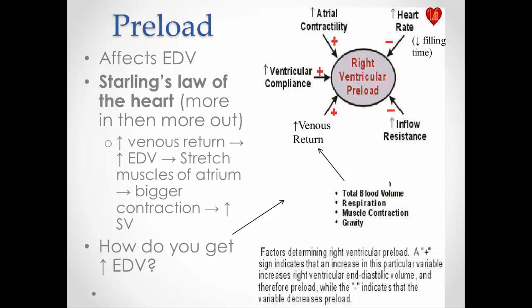So anything that increases preload basically will increase the force of the contraction. A slight stretch to those ventricles would therefore affect preload, and that in turn then affects end diastolic volume. If I have a little bit more blood in there and stretch it — a higher end diastolic volume — I'm going to stretch that muscle and I get a better muscle contraction. That whole idea is basically Starling's Law of the Heart: if I bring more blood in, then I pump more blood out, in its simplest terms.